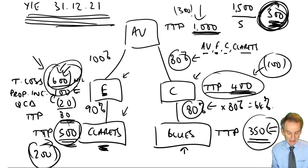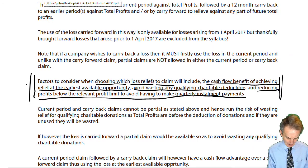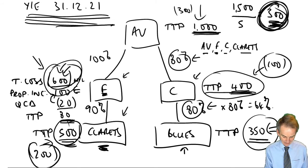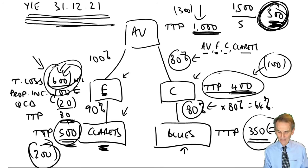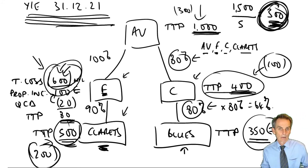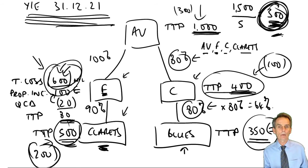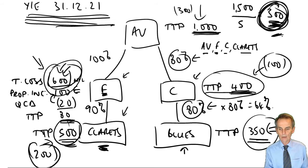Our three objectives from Chapter 18: relief at earliest available opportunity; avoid wasting qualifying charitable donations; and reduce profits to or below the profit limit to avoid quarterly instalment payments. In terms of the possibilities: a single company claim within F — the carry back was good for cash flow but required wasting the qualifying charitable donations, which was bad. Group relief, on the other hand, offered the flexibility of using some of the loss in whichever 75% group companies were available, targeting those with profit figures closest to the profit limit. We moved two companies that would otherwise have been large out of the large categorisation, removing quarterly instalment payments not just for this year but for the next accounting period as well.